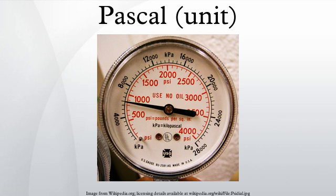Common multiple units of the Pascal are the hectopascal, which is equal to 1 millibar, the kilopascal, the megapascal, and the gigapascal. On Earth, standard atmospheric pressure is defined as 101.325 kilopascals. Meteorological barometric pressure reports typically report atmospheric pressure in hectopascals, corresponding to about 0.1 percent of atmospheric pressure.